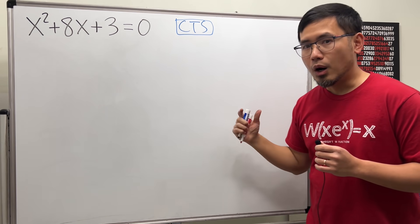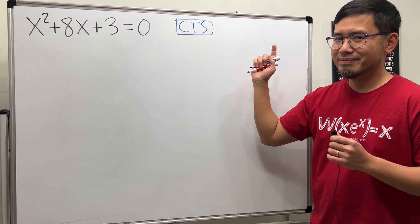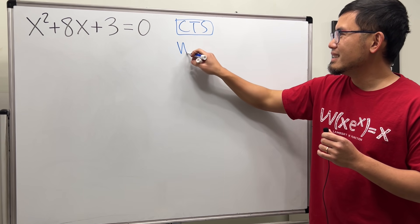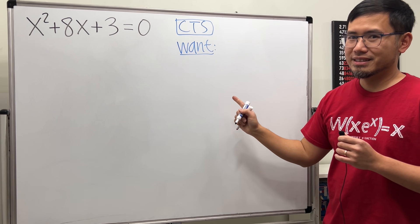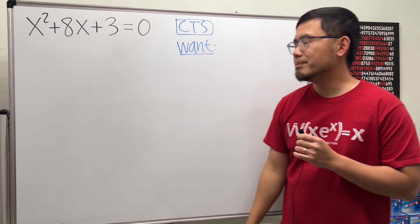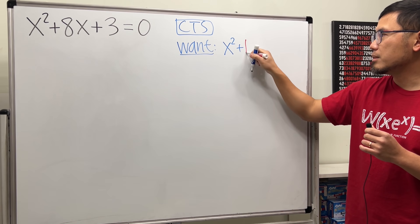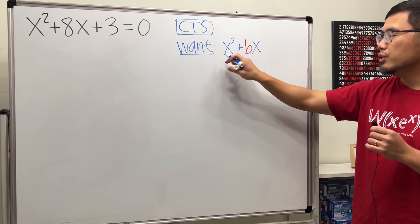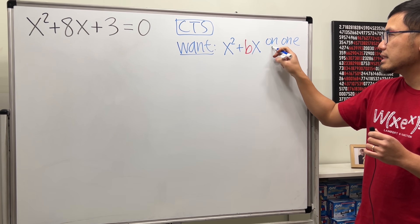All right, here this is what we want. First notice that we have three terms on the left that's equal to zero, but what you want is x² plus some number b times x, just these two terms on one side.